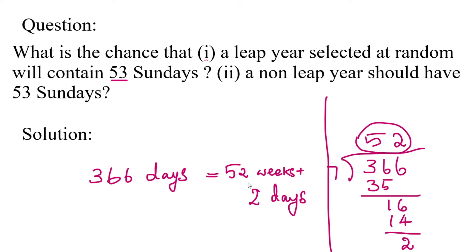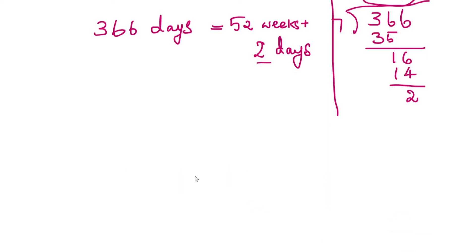The remaining 2 days may be any consecutive pair of days. Suppose the first week starts on Monday — it ends on Sunday, and the 2 extra days would be Monday and Tuesday. If the week starts on Tuesday, the 2 extra days are Tuesday and Wednesday, and so on.